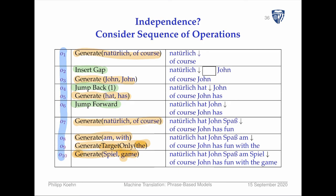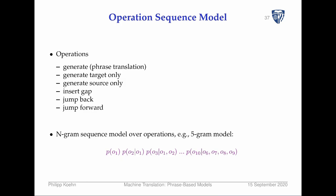The operations could be: generate (phrase translations), generate target only, generate source only (which is really a deletion step), insert gap, jump forward, jump backward. You could actually learn these operations from raw data and not even see this as a refinement of phrase-based models — there has been work on that, called n-gram translation models.